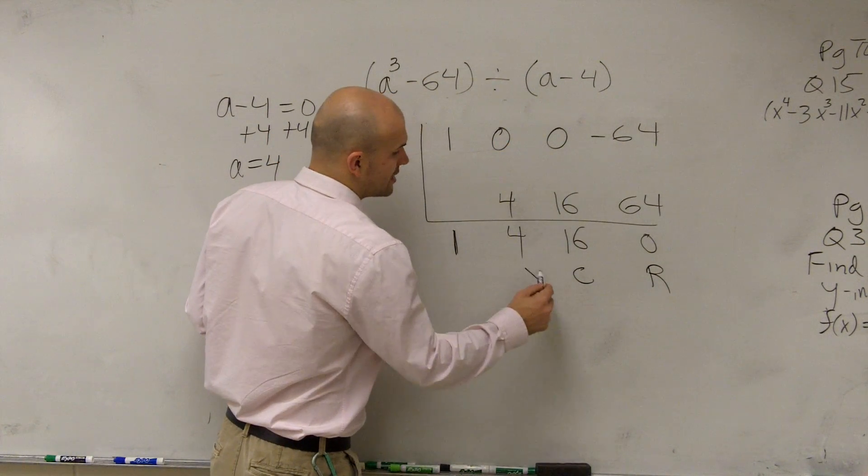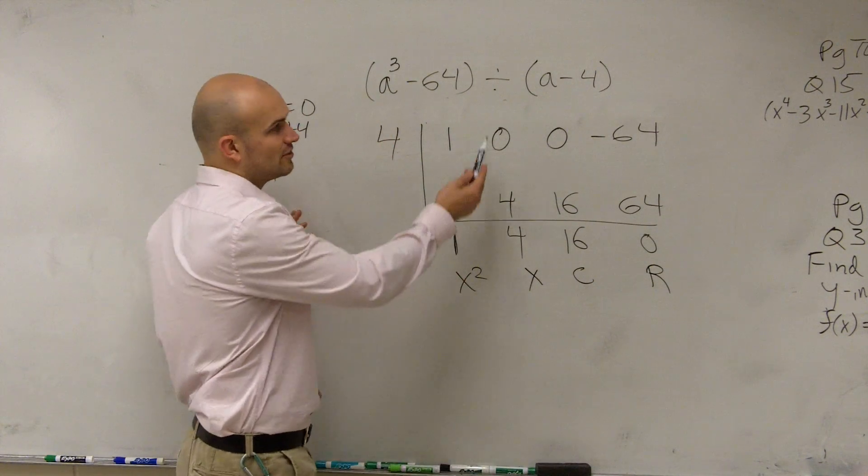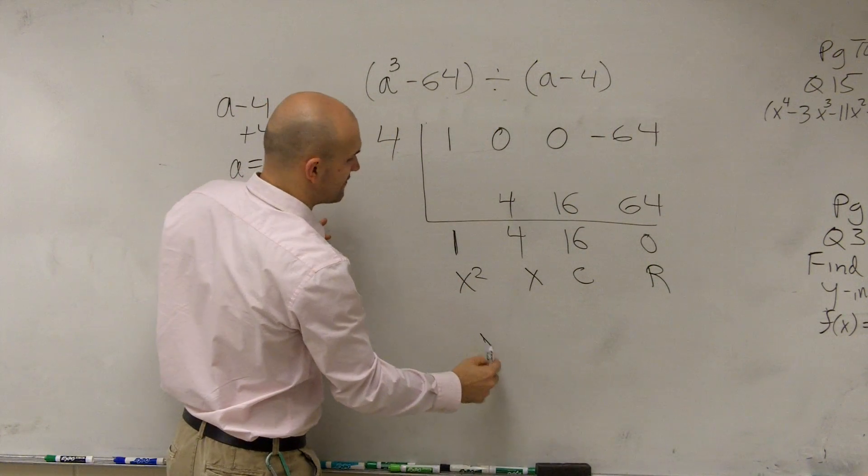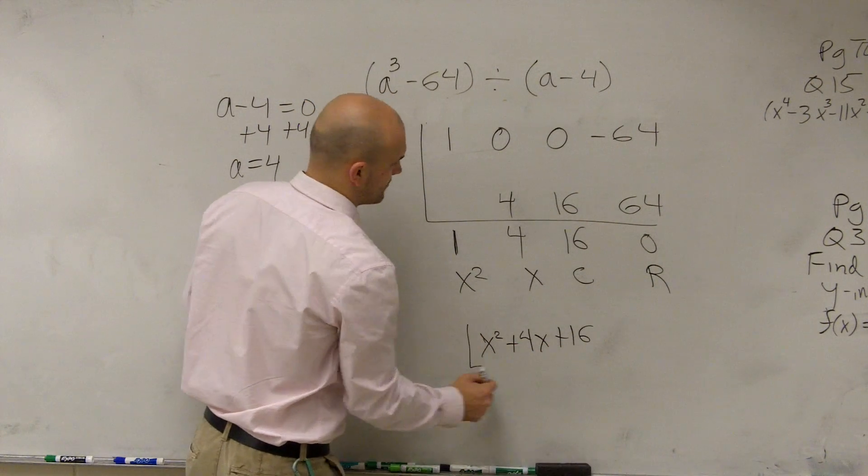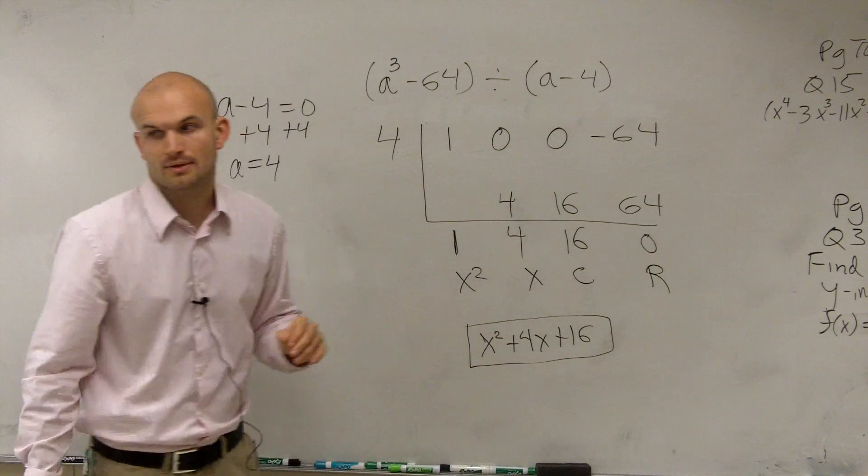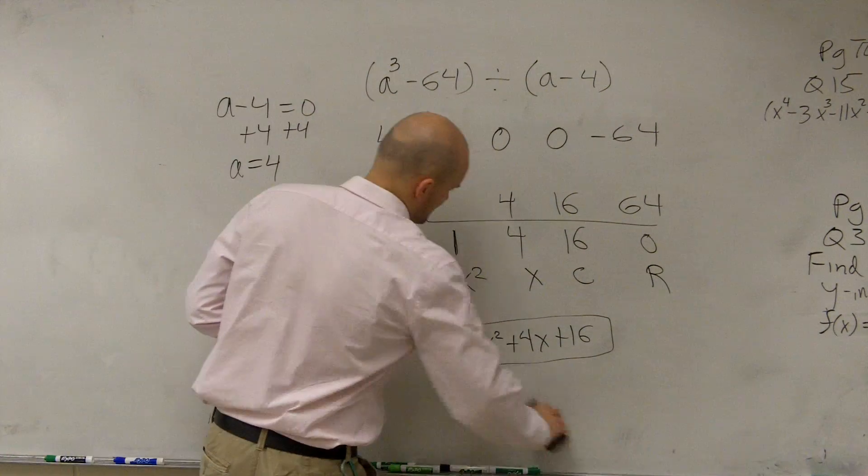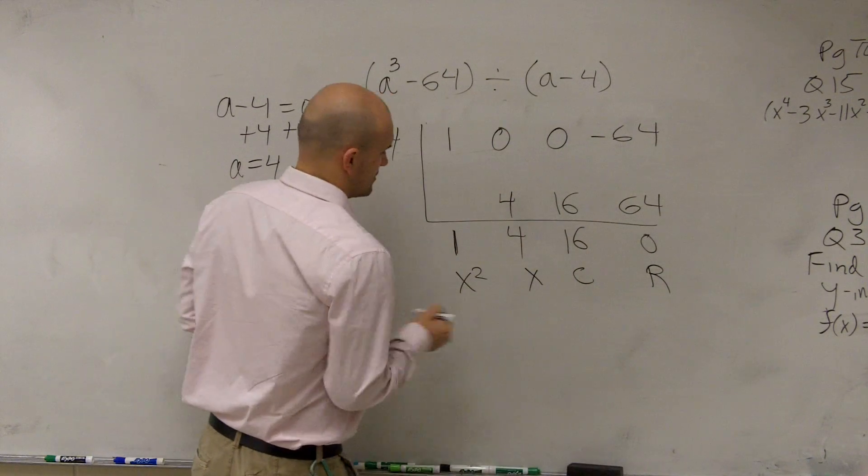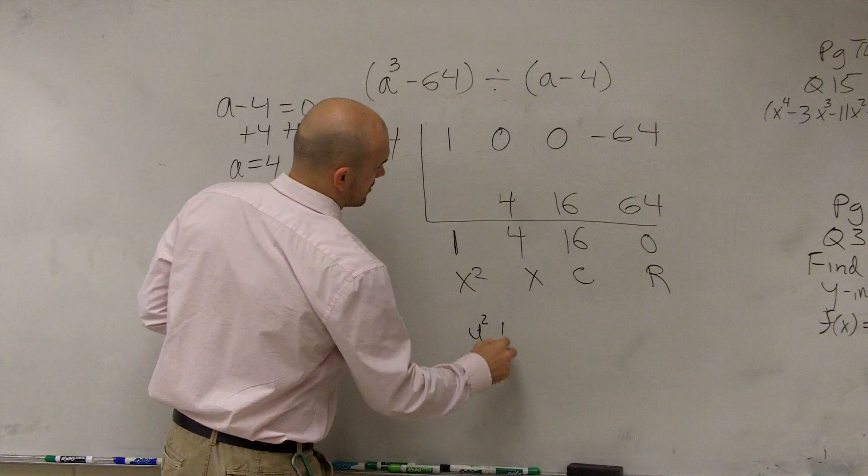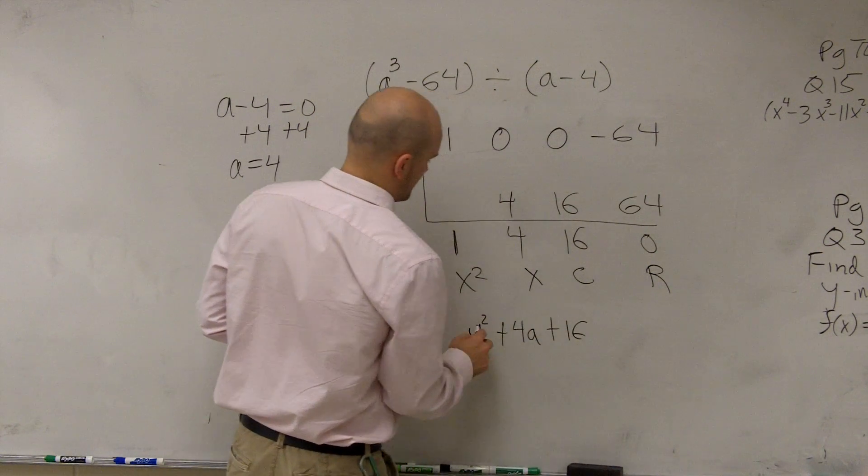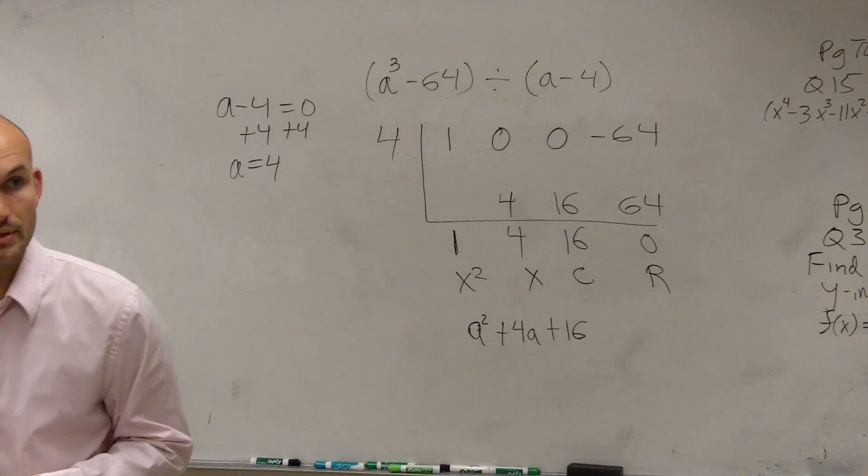Then we have this is our constant, our linear, and our quadratic. So therefore, the final answer, this divides into this, is going to provide you with x squared plus 4x plus 16. So we're definitely dealing with a's, not x's, thank you. a squared plus 4a plus 16.